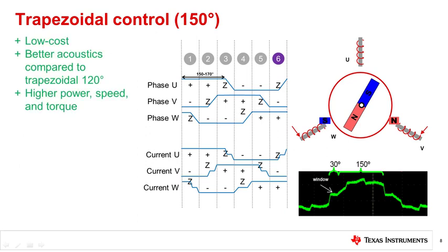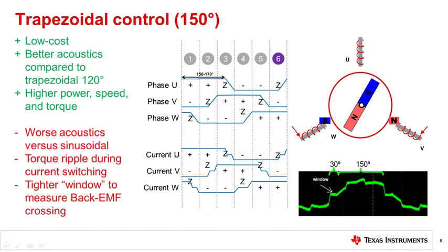Advantages to using trapezoidal 150 are that the solution is still low cost. It has better noise acoustics and efficiency compared to trapezoidal 120 when operating on a sinusoidal motor. The disadvantages are that the system still has worse acoustics than pure sinusoidal commutation and there will still be torque ripple.